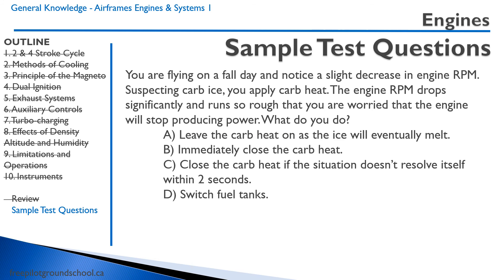You're flying on a fall day and notice a slight decrease in engine RPM. Suspecting carb ice, you apply carburetor heat. The engine RPM drops significantly and runs so rough you're worried the engine will stop producing power. What do you do? A: leave the carb heat on as the ice will eventually melt. B: immediately close the carb heat. C: close the carb heat if the situation doesn't resolve within two seconds. D: switch fuel tanks. The correct answer is A — leave the carb heat on as the ice will eventually melt. Turning off the carb heat would just re-ice the carburetor and eventually cause the engine to quit. Once the ice melts, the RPM will pick up, and then you can turn the carb heat off.